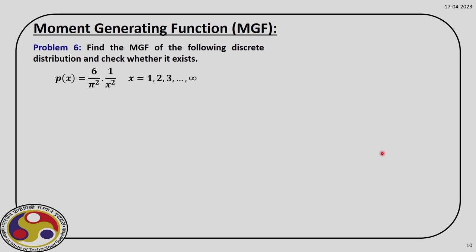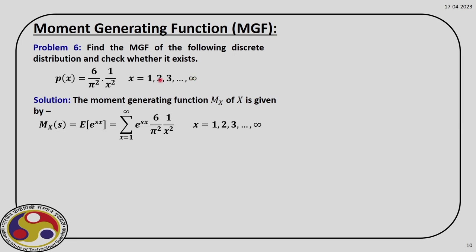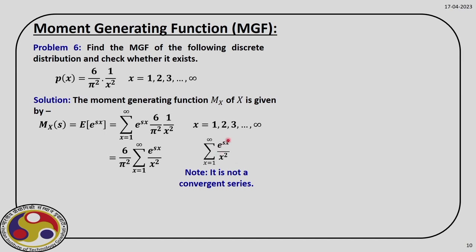Now let us consider a different distribution defined by a PMF where x takes discrete values. The moment generating function will again be a summation: the PMF multiplied by e^(sx) summed over the complete domain. However, in this case e^(sx)/x² where x ranges from 1 to infinity is not a convergent series. So in this case the moment generating function for this variable does not exist — not always do we get a convergent series.